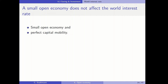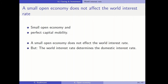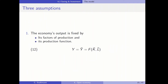The economy has perfect capital mobility. Because this economy is small, it does not affect the world interest rate — rather, the world interest rate determines the domestic interest rate. The world interest rate is an exogenous variable. We also assume that the economy's output is fixed by its factors of production — capital and labor — and its production function, so Y is also an exogenous variable.